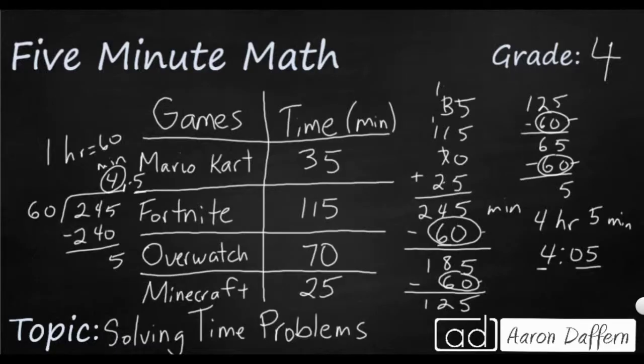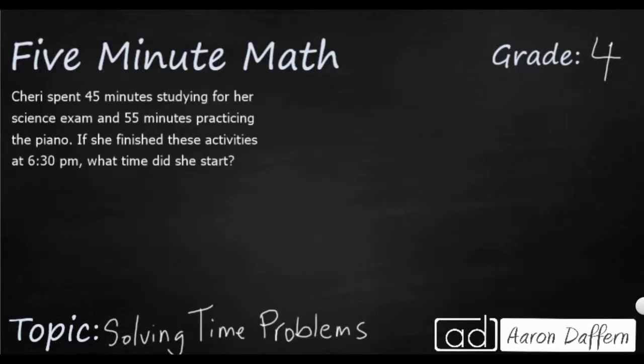Let's look at another problem. The other type of problem we can get with time is when we need to figure out when something began or when something ended. So we have a simple problem here. Cherie spent 45 minutes studying for science and 55 minutes practicing the piano. So let's add those two up real quick. So she spent 100 minutes.